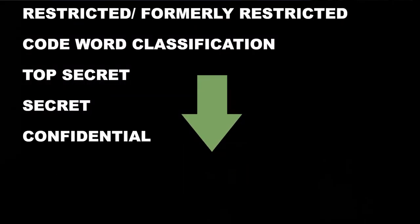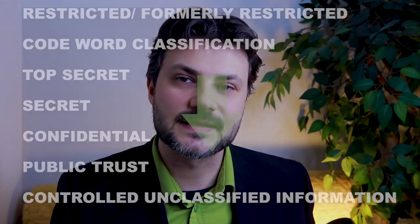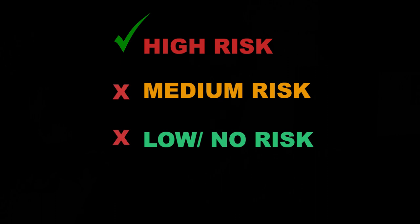As we go down the list, things become less restrictive and have a lesser chance of causing damage if disclosed. What you should remember is that hierarchy factor: if your data is classified at high risk, it will not also be flagged as medium risk or low risk.